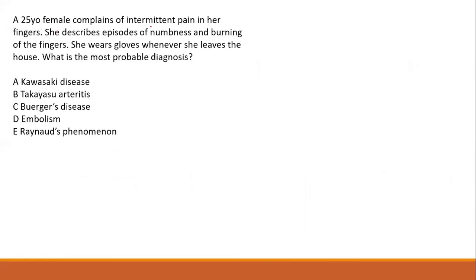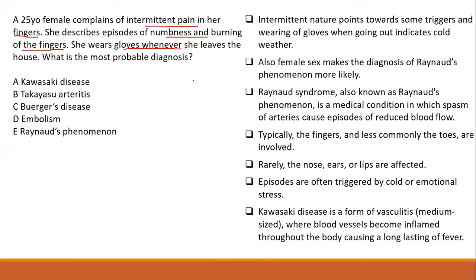A 25-year-old female complains of intermittent pain, numbness, and burning in her fingers. She wears gloves whenever she leaves the house, suggesting cold weather is a trigger. The most probable diagnosis is Raynaud's phenomenon — intermittent, triggered by cold or emotional stress, caused by decreased blood flow in the digital arteries.